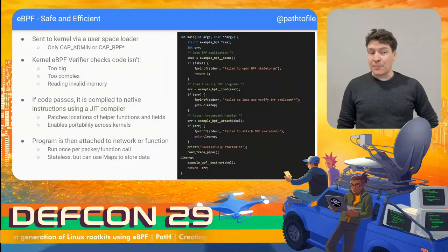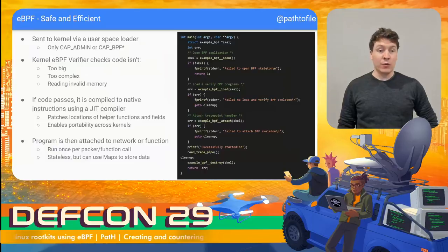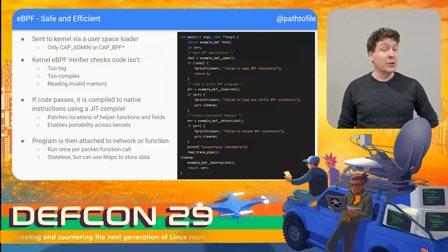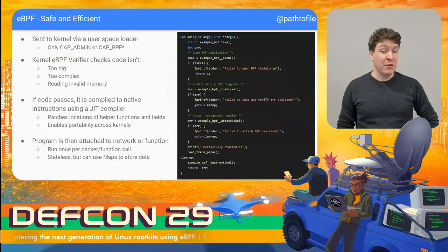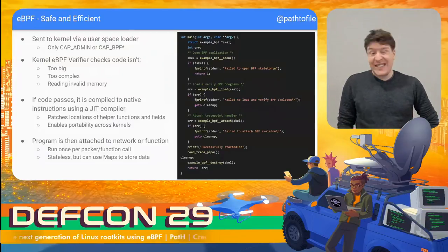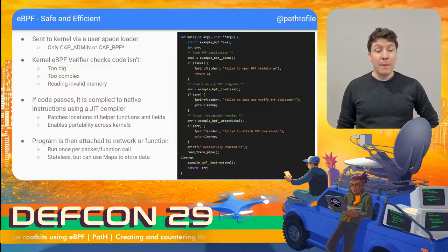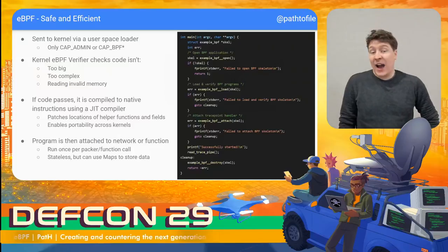The kernel doesn't blindly trust this bytecode. The kernel runs what's called the BPF verifier, which checks every branch and every possible value of every possible variable in the code to make sure it is not doing things such as trying to read invalid memory, slow the system down by being too big or complex, or do anything else that might cause the kernel to crash. This is where eBPF gets its safety guarantee — only code that passes all of the verifier's extensive checks is allowed to actually be loaded and run.